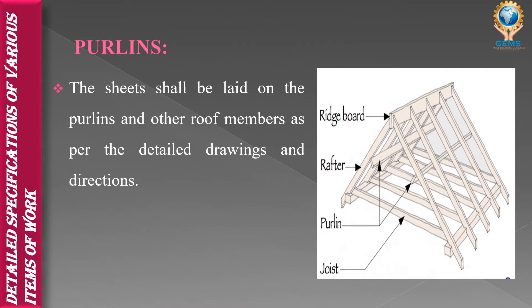The next topic is purlin. In architectural or structural building, a purlin is a horizontal beam used for structural support in buildings, most commonly used in the roof. In the image you can see the parts of a roof — this horizontal beam is called a purlin. The AC sheet will be laid on the purlin. The lower portion is called a joist, the slanting portion is called a rafter, and the upper portion is called a ridge board. Using these parts, we get a strong roof.